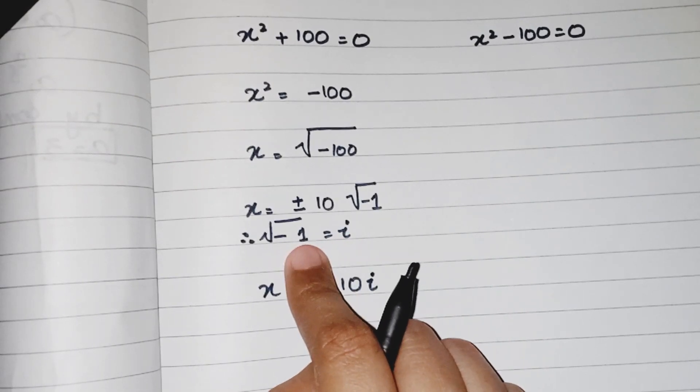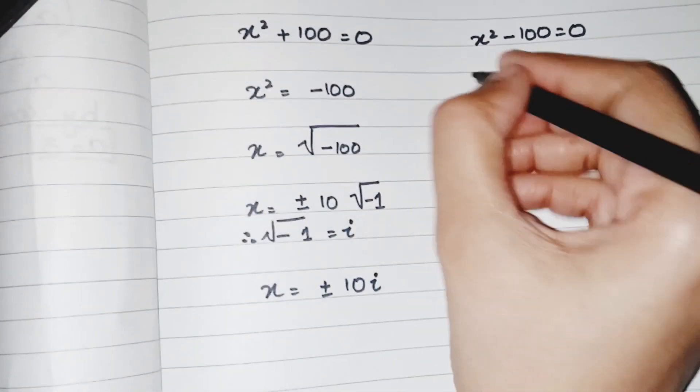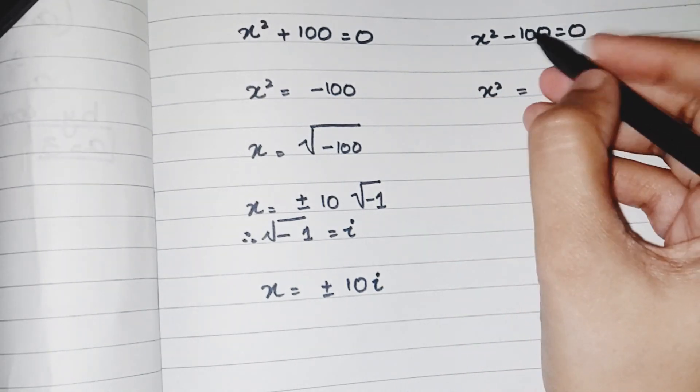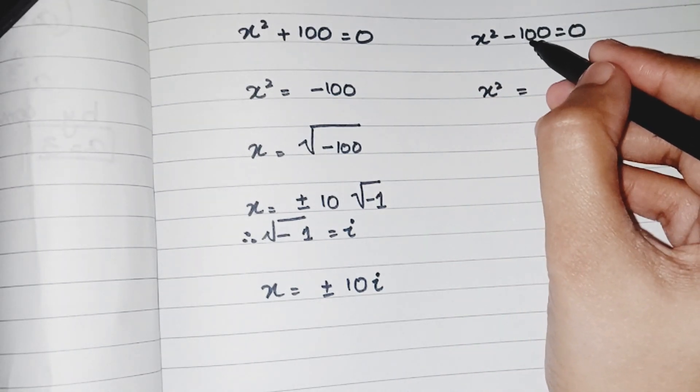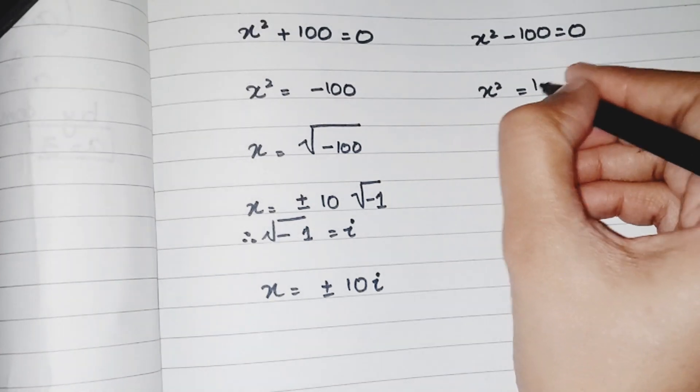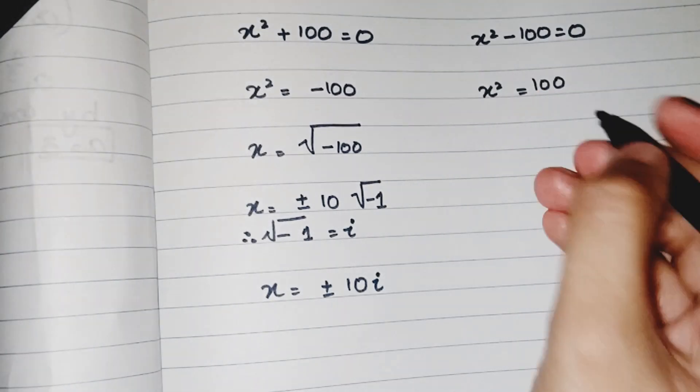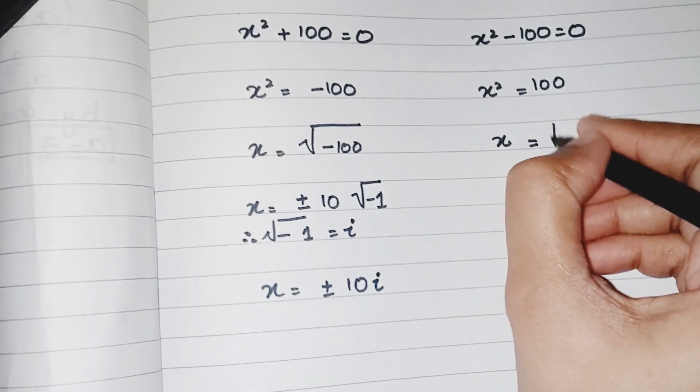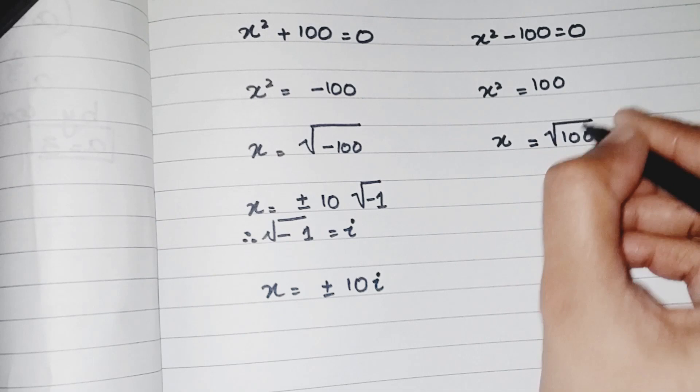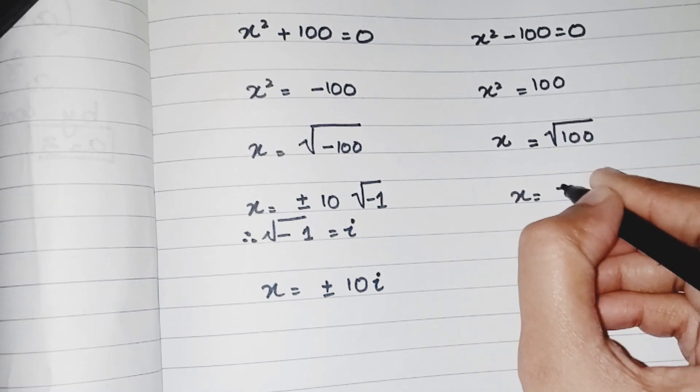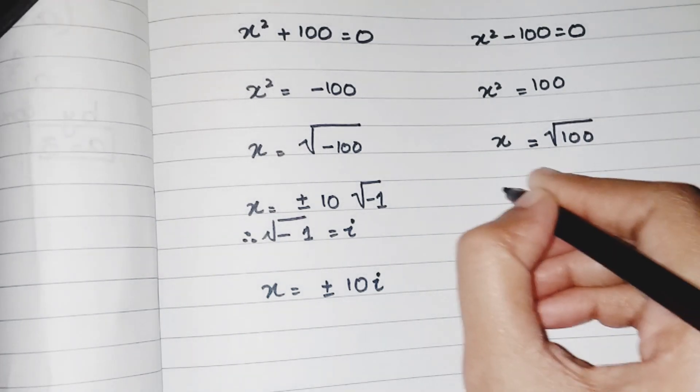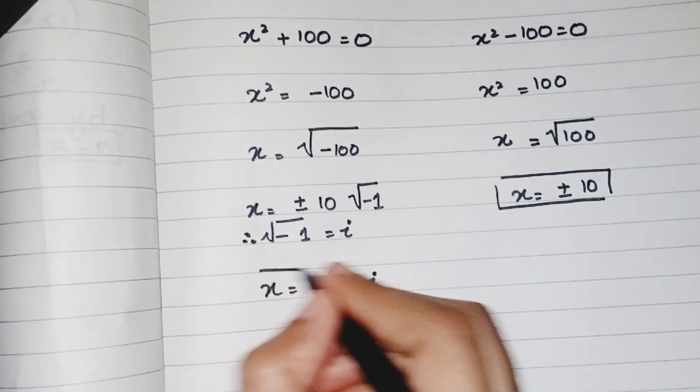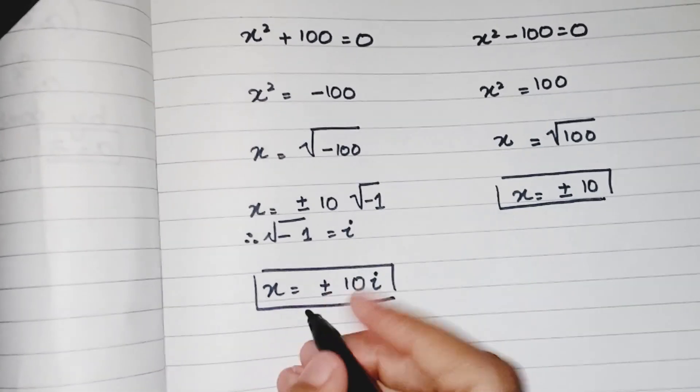In place of square root of minus 1 we were using iota. On the other hand I have x squared. Doing the same method, when the minus 100 moves to another side it will be plus 100. For removing the square on the x we have to take the root of 100, so I have x equals plus minus 10.